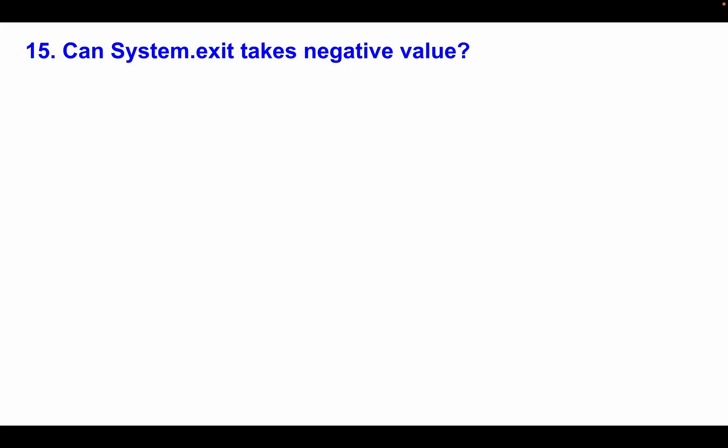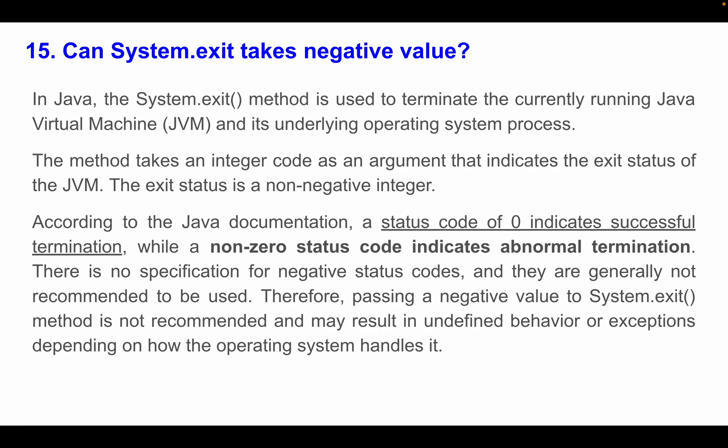Question 15: Can System.exit() take a negative value? In Java, System.exit() is used to terminate the currently running JVM process. The method takes an integer status code: zero indicates successful termination, while non-zero indicates abnormal termination. There is no specification for negative status codes, and they are generally not recommended. Passing a negative value to System.exit() is not recommended and may result in undefined behavior or exceptions depending on how the operating system handles it.